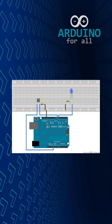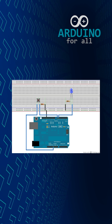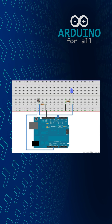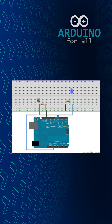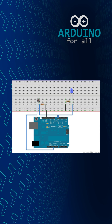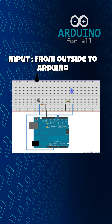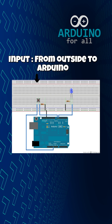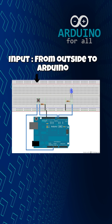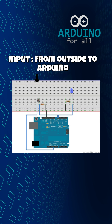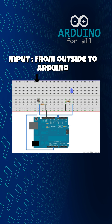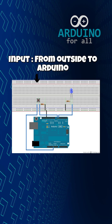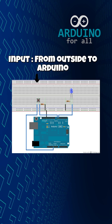A digital signal is the simplest form of electrical communication between a microcontroller and the outside world. It can have only two states: on or off. In electrical terms, that means a voltage level that is either high or low.